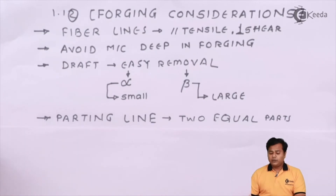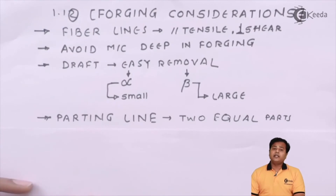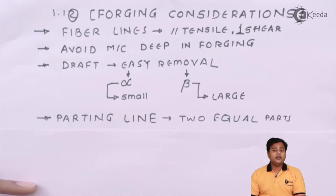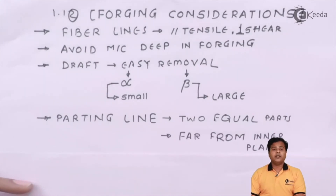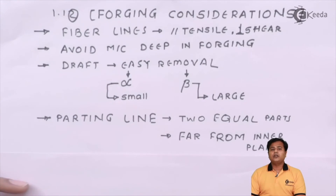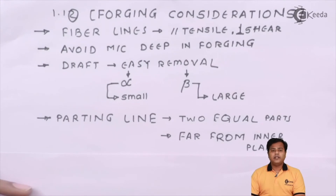These parting lines should be taken care of so that two equal parts will be created. As you can see in the slide, if two equal parts are created, the parting line will match very properly. Additionally, the parting line should be far from the inner plane. If your parting line is quite close to the inner core or inner plane, it will be uneven. But if it is far from the inner plane, it will not have an adverse effect, because the cooling rate at the inner plane and the cooling rate at the outer plane will be different.